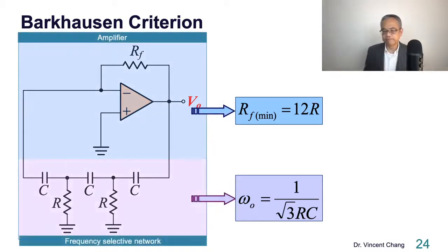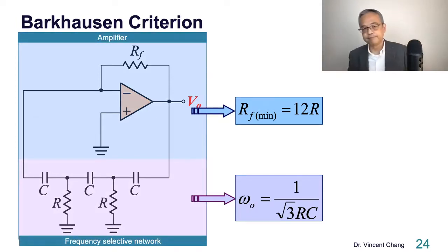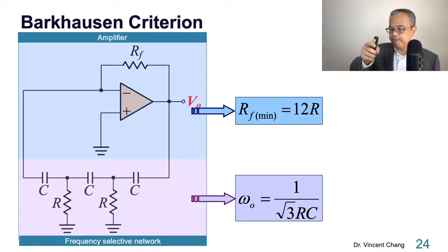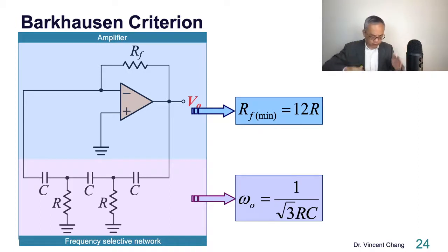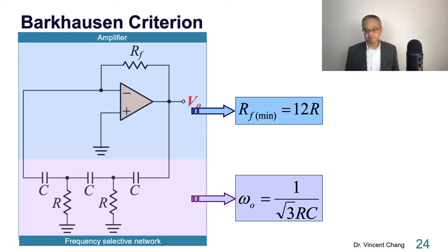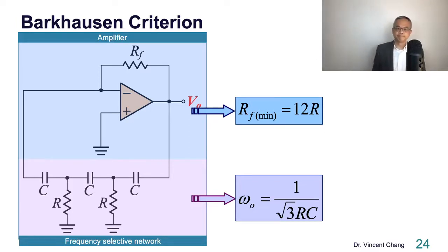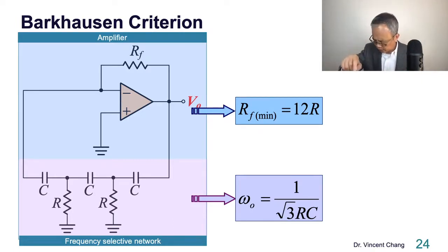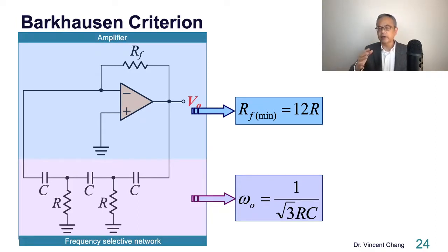The frequency of oscillation is decided by the third-order RC network — at this frequency, the third RC network generates 180 degrees so that the total phase shift around the loop is zero, satisfying the Barkhausen phase criterion. The minimum resistance RF = 12R is decided by the amplifier: at the frequency of oscillation, the magnitude of the loop gain must be greater than or equal to 1.